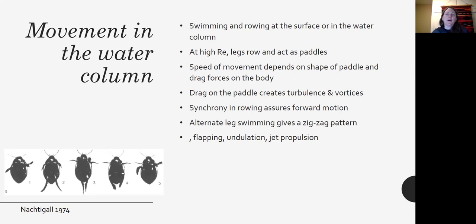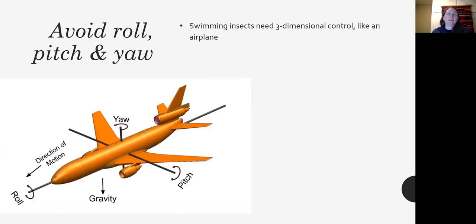We're going to move into other methods, things like flapping, undulation and jet propulsion next. So a few more things about swimming. Swimming insects need, they need to be able to control themselves in three dimensions, just like an airplane. And so there's rolling and then there's pitching, just kind of moving up or down. And then there's a yaw, which is kind of the side to side movement.